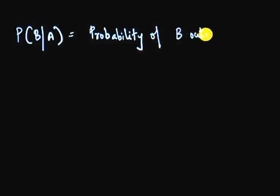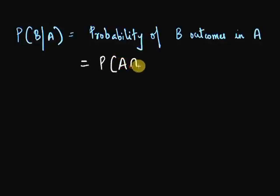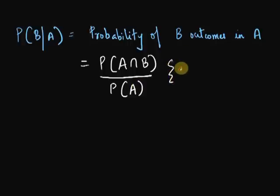Similarly, if you take the reverse, conditional probability of B given that A is true, that would be the probability of B outcomes in A. Or, P(A intersection B) divided by the probability of A, as the condition set by us now is all outcomes favorable to A, and we're looking at the likelihood that B occurs in A.